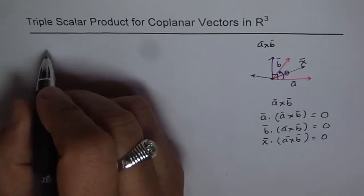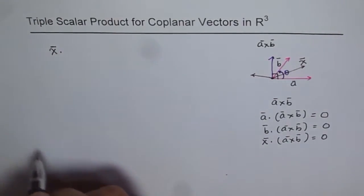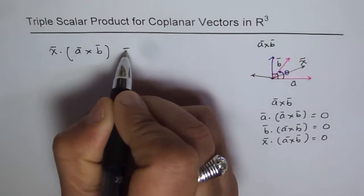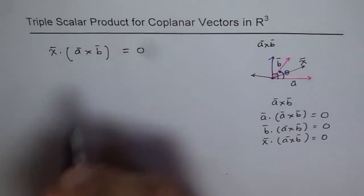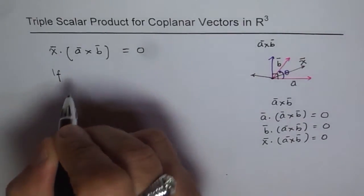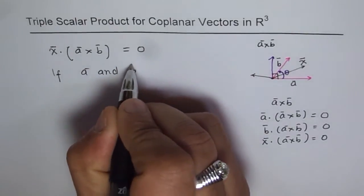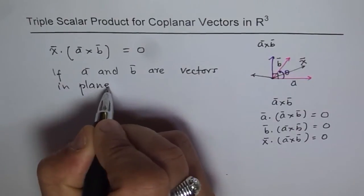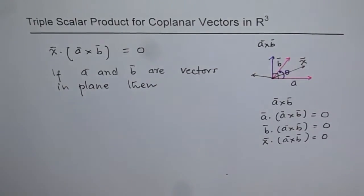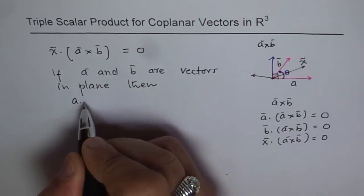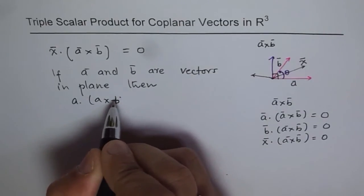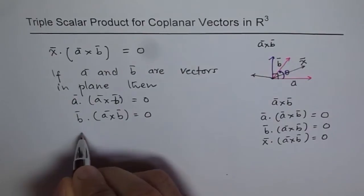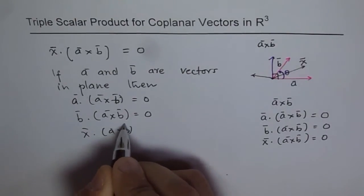So what we have come across here is a property. Any vector x on the plane of this paper dot product with A cross B, where A and B are vectors in this plane, you'll find this to be zero. So what we conclude from here: if A and B are vectors in a plane, then A dot (A cross B) is zero, B dot (A cross B) equals zero, and x dot (A cross B) equals zero.